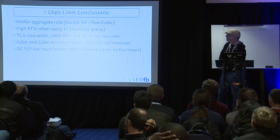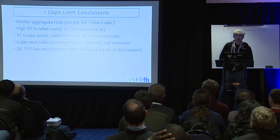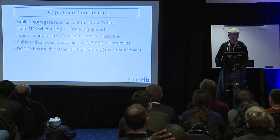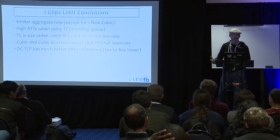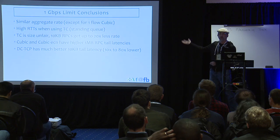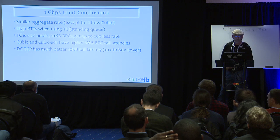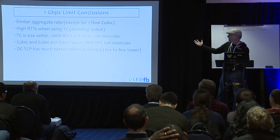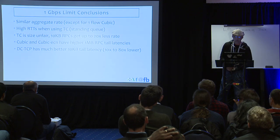Conclusions for this experiment: we have similar aggregate rates across different experiments. We have high RTTs when using the TC queuing discipline to enforce the one gigabit per second limit. Using TC is size-unfair — 10 KB RPCs get up to 20 times less bandwidth than one megabyte RPCs because of the standing queue. Cubic and cubic ECN using NRM have higher tail latencies. DCTCP has really nice tail latencies, 10 to 20 times smaller compared to the others.